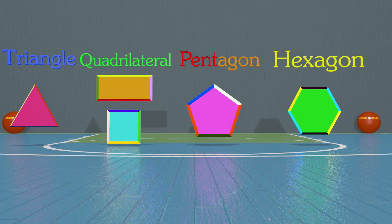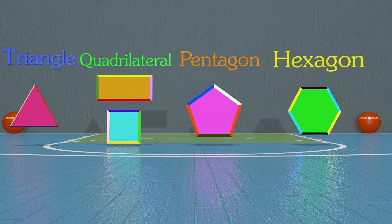And 'hex' means six, so a hexagon has six sides and six angles. Phew, that's a lot to remember! Thanks for learning shapes with me today, guys — it's been awesome. We'll see you next time!